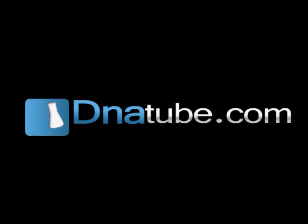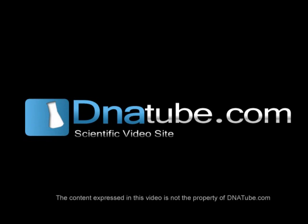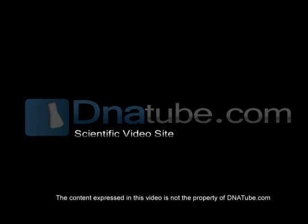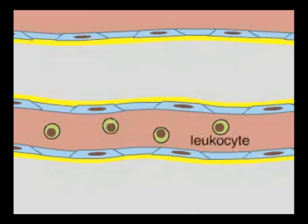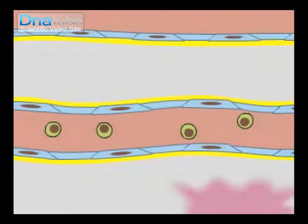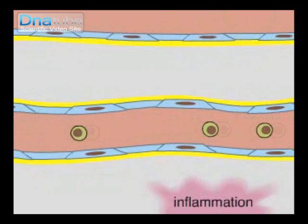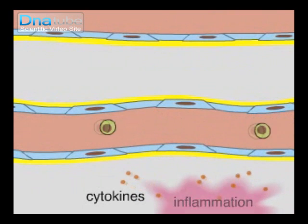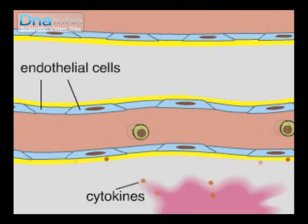Leukocytes are white blood cells that help fight infection. At sites of injury, infection, or inflammation, cytokines are released and stimulate endothelial cells that line adjacent blood vessels.